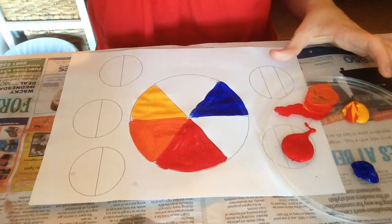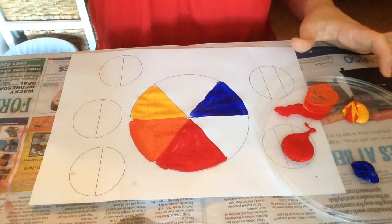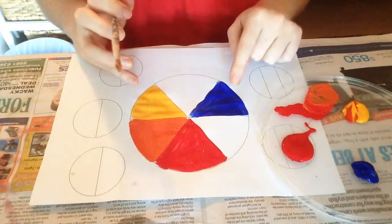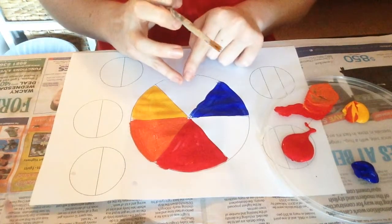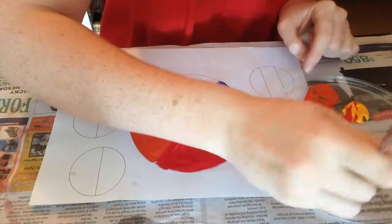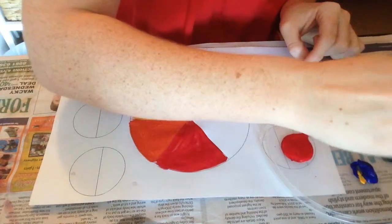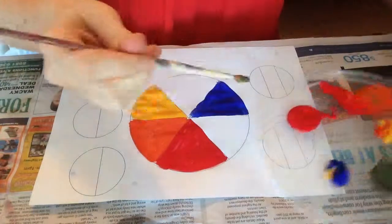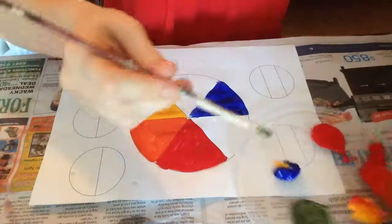Then our next secondary color is yellow plus blue, which equals green. So a bit of yellow over here, a bit of blue. You can see that. Goes in. Oops, wrong.